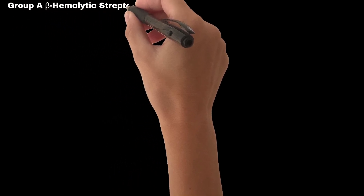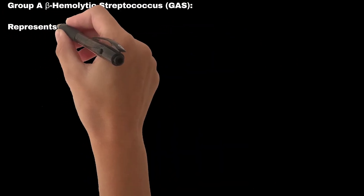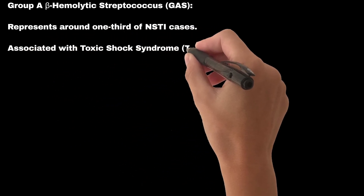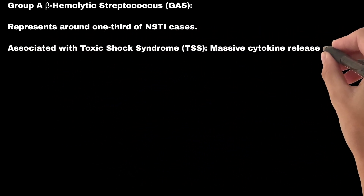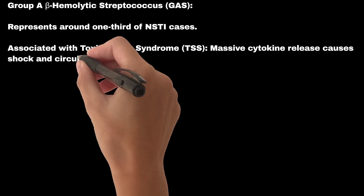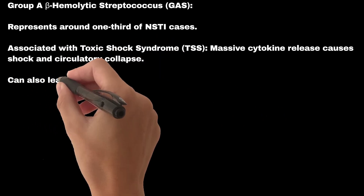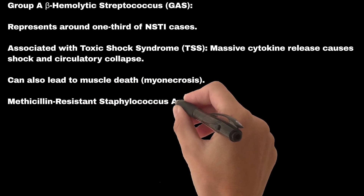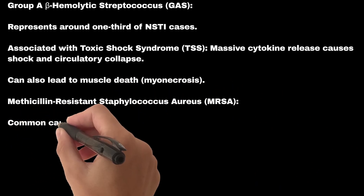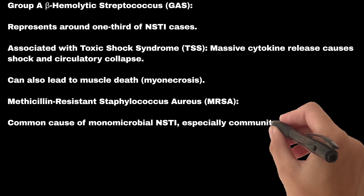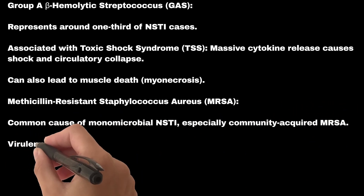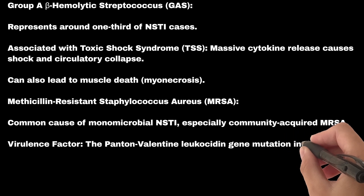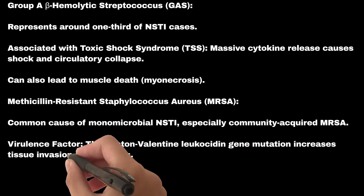Group A beta-hemolytic Streptococcus (GAS) represents around one-third of NSTI cases. It is associated with Toxic Shock Syndrome (TSS), where massive cytokine release causes shock and circulatory collapse, and can also lead to muscle death — myonecrosis. MRSA is a common cause of monomicrobial NSTI, especially community-acquired MRSA. Its virulence factor, the Panton-Valentine leukocidin gene mutation, increases tissue invasion and necrosis, requiring careful antibiotic selection.